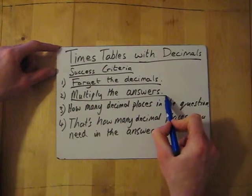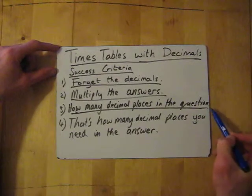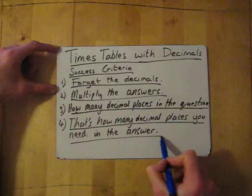Then multiply the answers. Then in your head, think how many decimal places are in the question, in the whole question, and then basically that's how many decimal places you need in your answer.